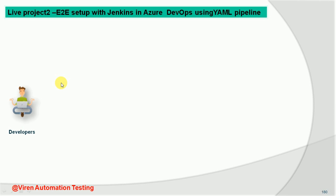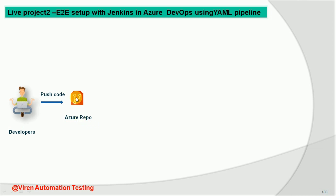Let's understand this project from scratch and implement it step by step. There are some developers who are working to develop applications, writing code in different programming languages like Java or ASP.NET on a daily basis. After that, they push the code to a source code management repository. Here we are using Azure Repo, which is a service provided by Azure DevOps where we can keep our source code, similar to GitHub or Bitbucket.